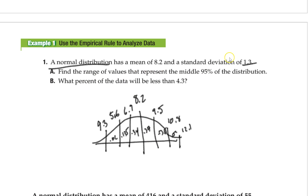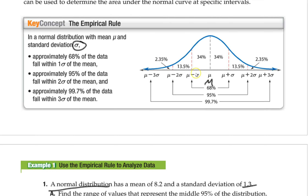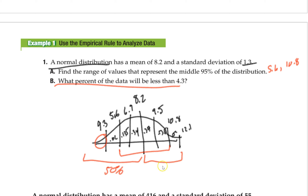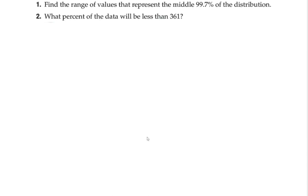Find the range of values representing the middle 95%. Looking at the empirical rule, the middle 95% spans two standard deviations on each side, so that's from 5.6 to 10.8. Now, what's the probability of being less than 4.3? Since halfway is always 50%, I know I'm in the bottom half. So I calculate: 0.50 minus 0.34 minus 0.135 minus 0.02, and I get about 0.005. That's the probability of being less than 4.3.